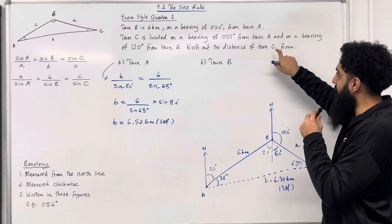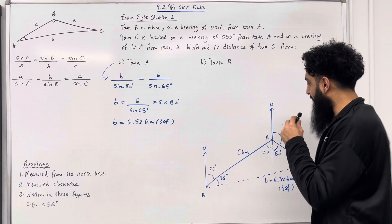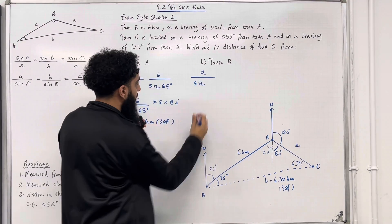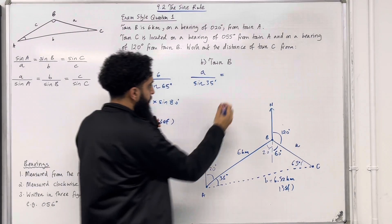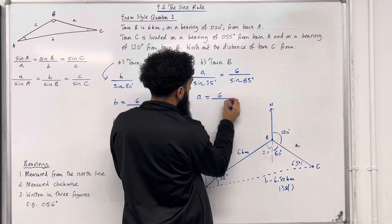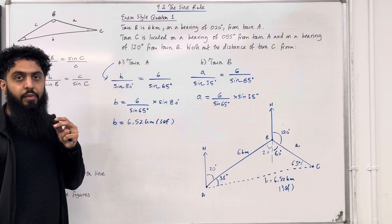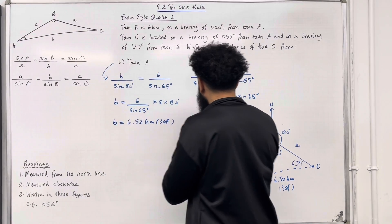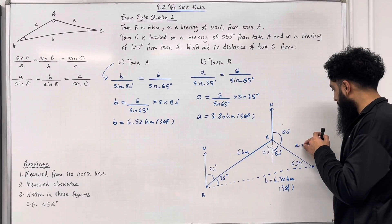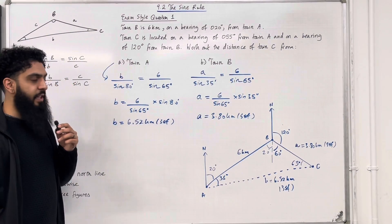Now in part B we want the distance of town C from town B, which is a. Using the sine rule again: a over sin 35 degrees equals 6 over sin 65 degrees. So a equals 6 over sin 65 degrees multiplied by sin 35 degrees. Putting this into the calculator and rounding to three significant figures gives a equal to 3.80 kilometres. That completes the exam style question.